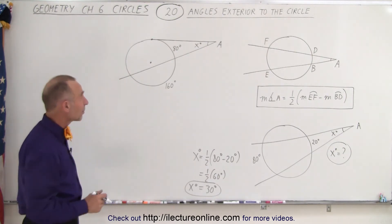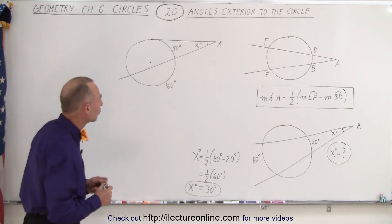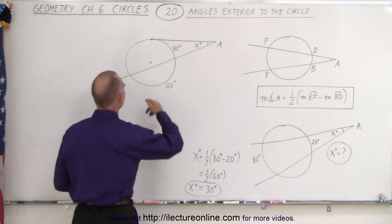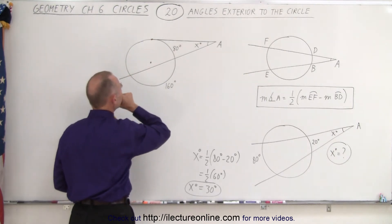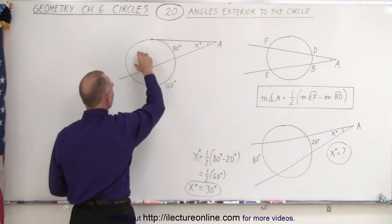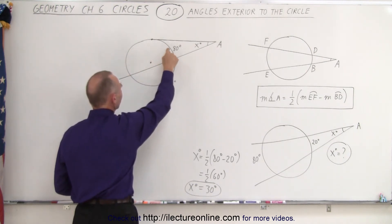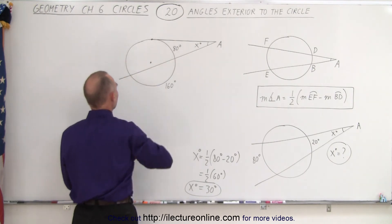Here we can do the same thing, although we have a slightly different approach. Notice that they don't give us the arc here on the other side. This is the intercepted arc on the far side, and we have the intercepted arc on the closed side. That is given, but we're not given this one right here.